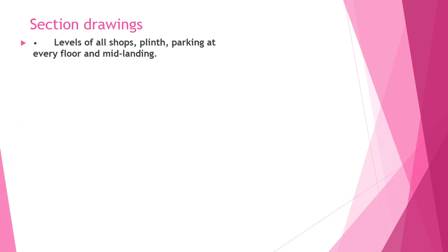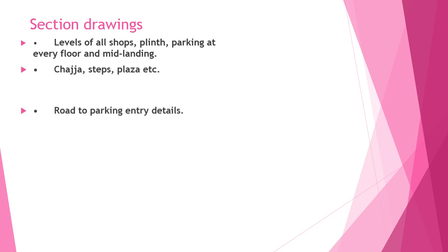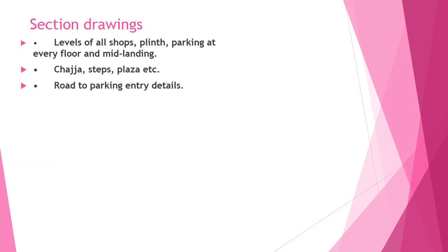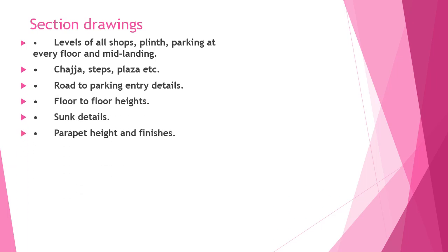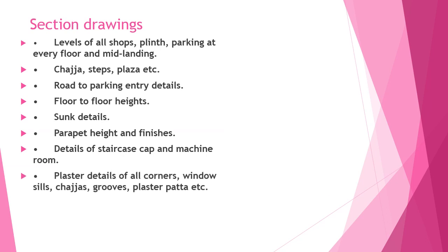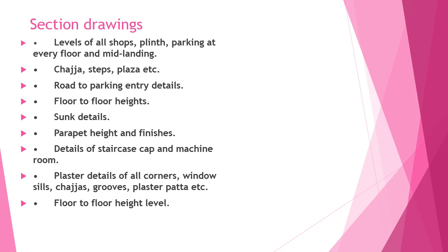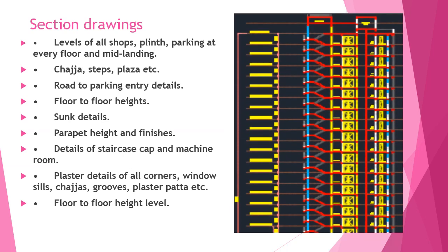Sectional drawings: levels of all shops, plinth, and parking at every level have to be marked. Road to parking entry details, floor-to-floor heights, sunk details, parapet height and finishes, details of staircase cage and machine rooms, plaster details of all corners, and floor-to-floor height levels have to be provided. This sectional drawing gives a rough idea of how things look in section.